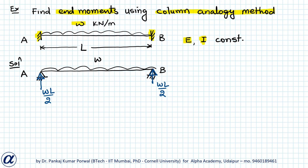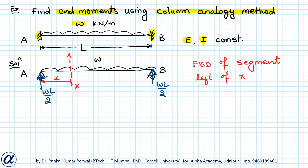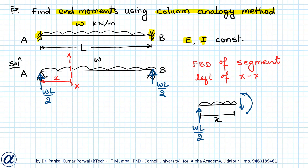To find the bending moment diagram, cut a section at distance x from support A, called XX, and draw the FBD of the segment to the left of XX. That segment of length x has support reaction wL/2, and at section XX we have a positive shear force V in the downward direction and a positive bending moment M in the anti-clockwise direction.